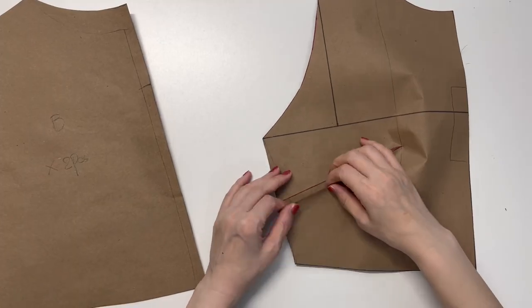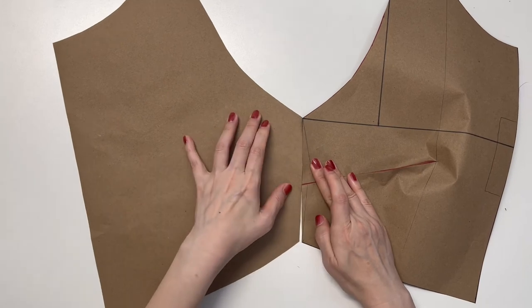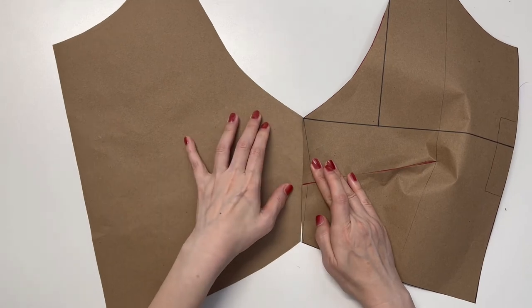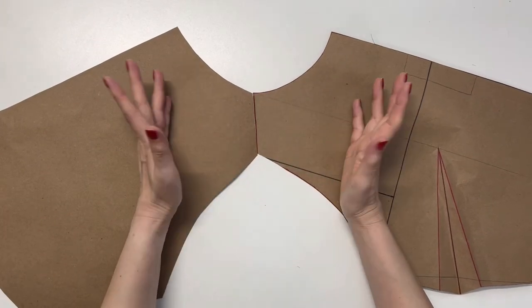Now let's make sure everything is correct. The sideline of the front and back panels must match, and the shoulder lines also match. Okay, it's perfect.